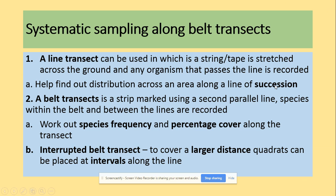If you have questions about succession, you could use a line transect. Then there's the belt transect — a strip marked using a second parallel line, and species between the lines are recorded. It's useful to work out species frequency and percentage cover along the transect. Interrupted belt transects are used to cover a larger distance, with quadrats placed at intervals along the line.